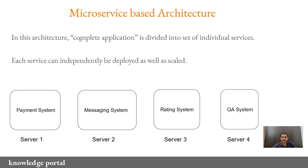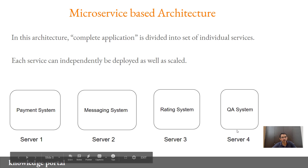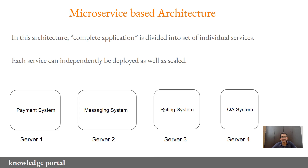In a microservice based architecture, the complete application is divided into a set of individual services. Instead of deploying the complete application together, you divide it into a payment system, messaging system, rating system, and QA system. These are individual services and each service can be independently deployed as well as scaled. So here you have deployed payment on server one, messaging on server two, rating on server three, and QA on server four. If there is a high amount of load on the QA system, you can leave the other systems intact and increase the servers associated with QA using auto scaling — a microservice based architecture allows a lot of flexibility.